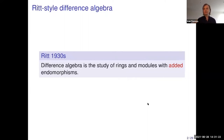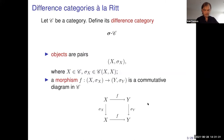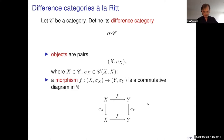I will now present a kind of Ritt-style difference algebra in a more categorical way. Starting with an arbitrary category C, we want to define the difference category sigma C, or maybe the better name would be the category of difference objects. Objects are pairs (X, sigma_X), where X is just an object of C, and sigma_X is an endomorphism of X. A morphism of a pair of difference objects is simply a commutative diagram in C — that is, a morphism F in C which commutes with sigma_X and sigma_Y. In the rest of the talk, I may refer to sigma_X as the difference operator on X.